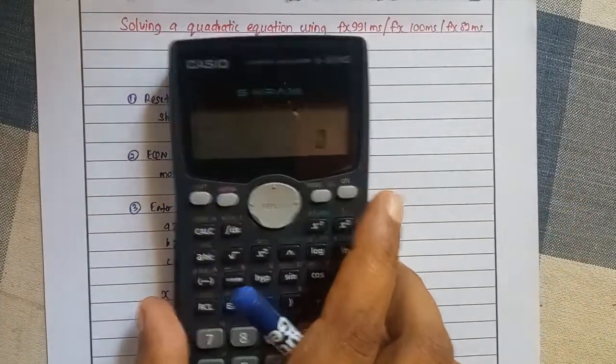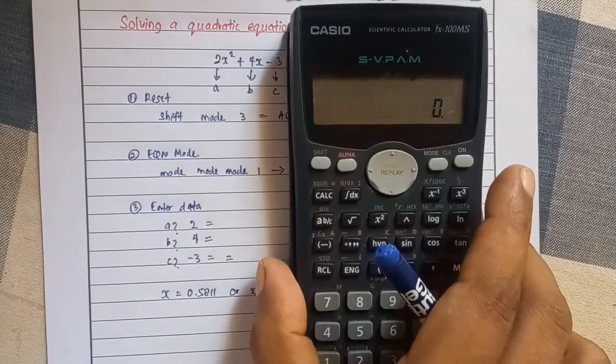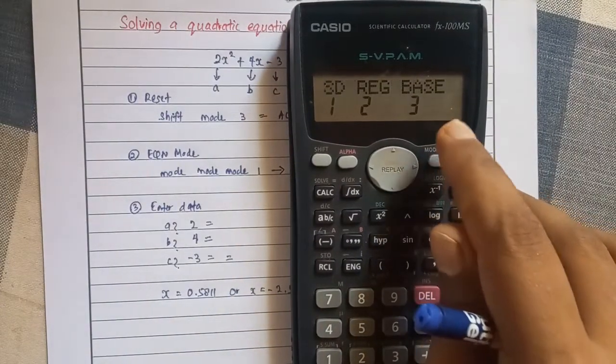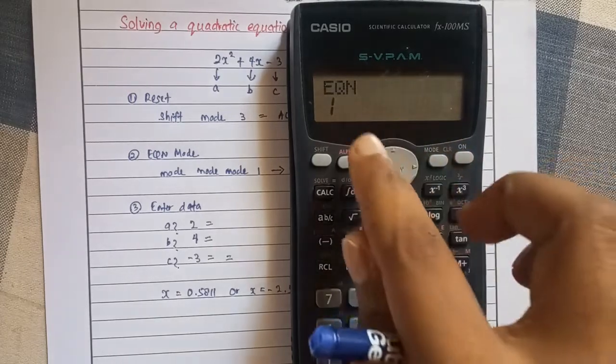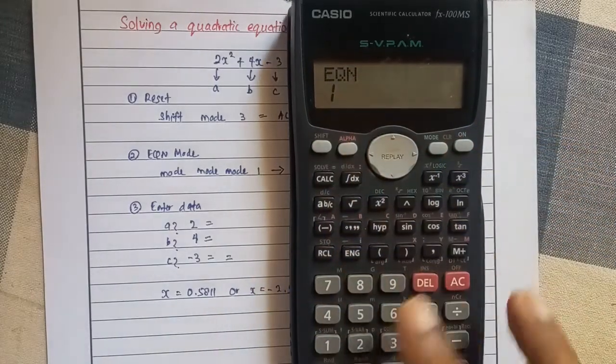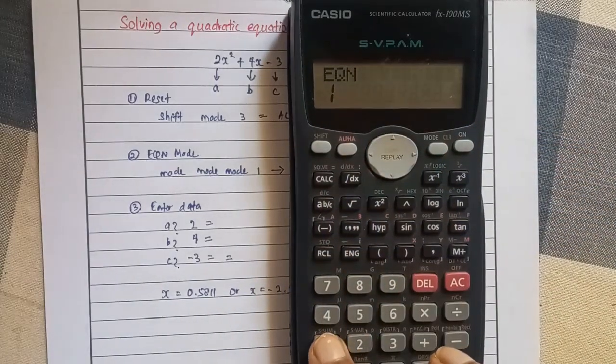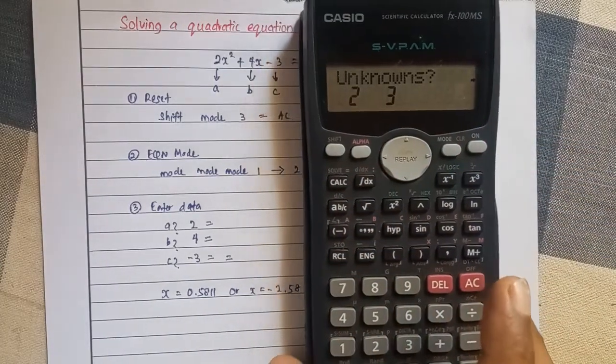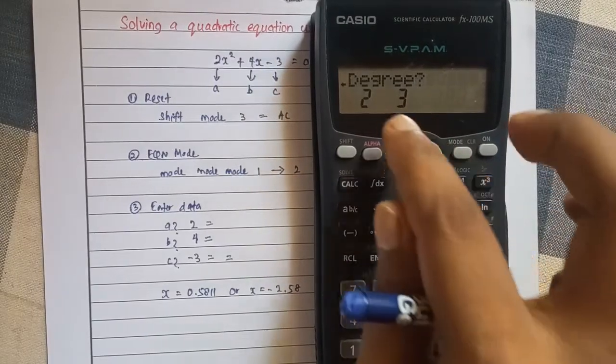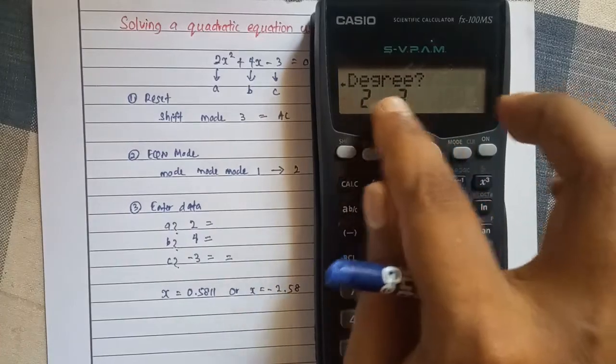Let's see how we can do it in our calculator. Press the mod button 3 times, then you can see EQN on the display. Under EQN, you can see number 1. It means you need to press number 1. Then press the right arrow key over here. Then it is asking how many degrees are there.